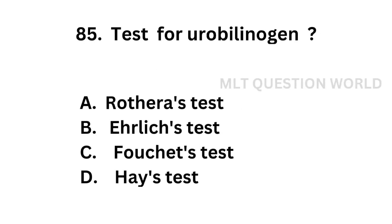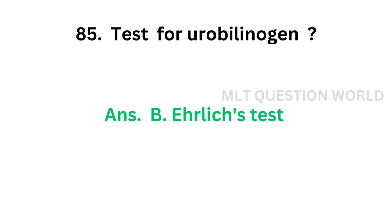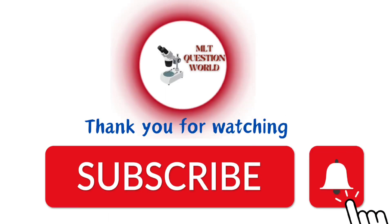Question number 85: Test for urobilinogen — Option A: Rothera's test, Option B: Ehrlich test, Option C: Fouchet's test, Option D: Hay's test. The correct answer is Option B, Ehrlich test. Urobilinogen is detected by the Ehrlich test. So friends, today we are winding up. Subscribe the channel. Thank you for watching.